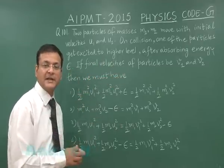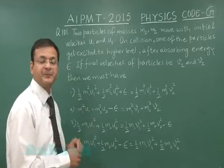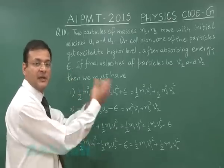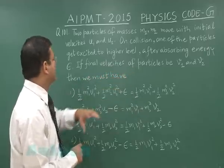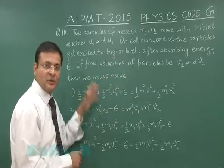Higher level means it gains some other energy after absorbing energy ε. From their initial total kinetic energy, this amount is lessened to become their final kinetic energy. If final velocities are v₁ and v₂, then we must have—and the options are given.